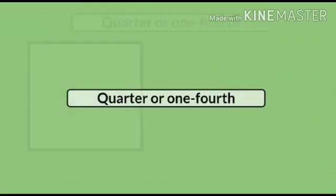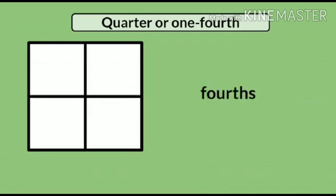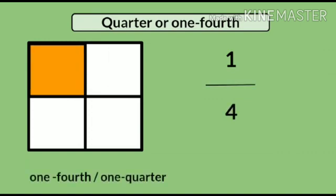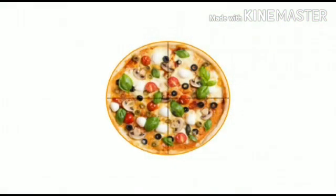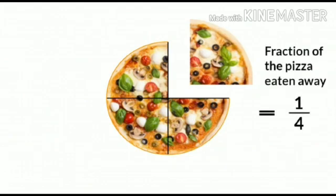Now, we will discuss about quarter or one fourth. When something is divided into four equal parts, we call them fourths or quarters. One part out of four equal parts is one fourth or one quarter. For example, consider this pizza. When we divide this pizza into four equal parts and if I eat away one part, then we can say that I ate one by four, or a quarter, of the whole pizza.